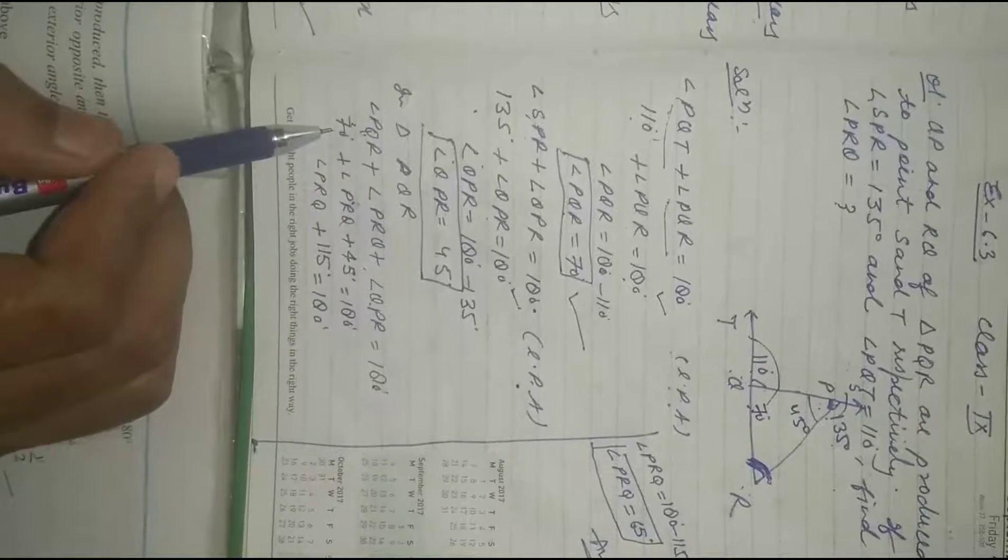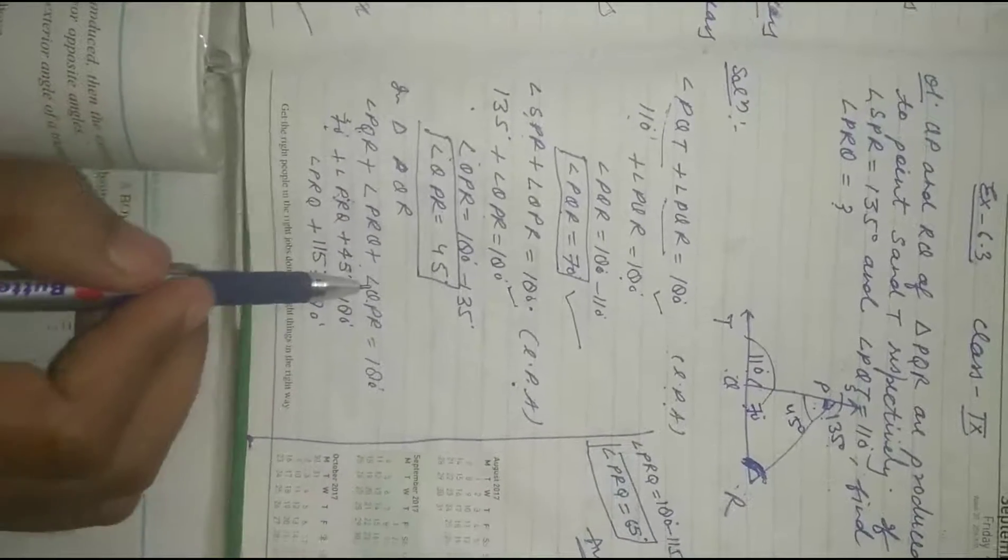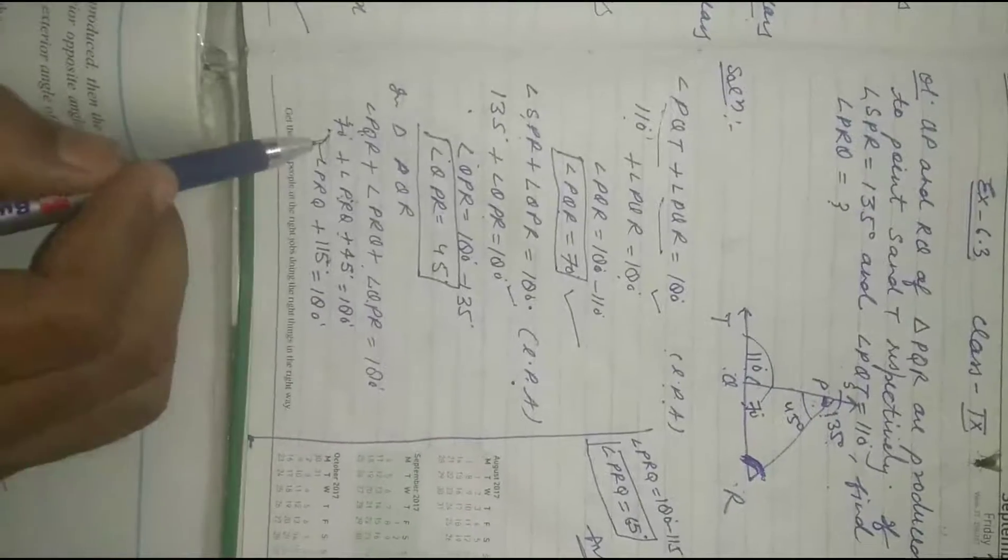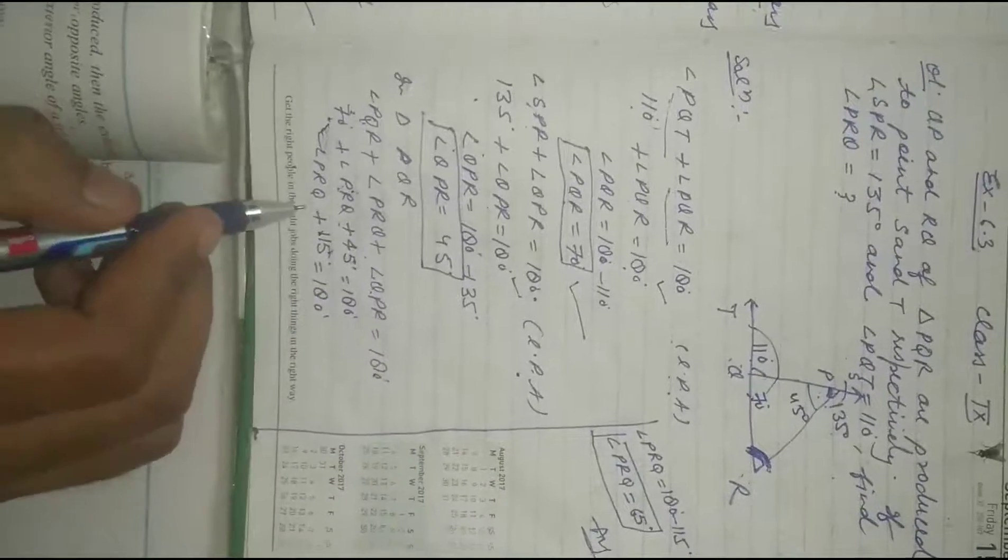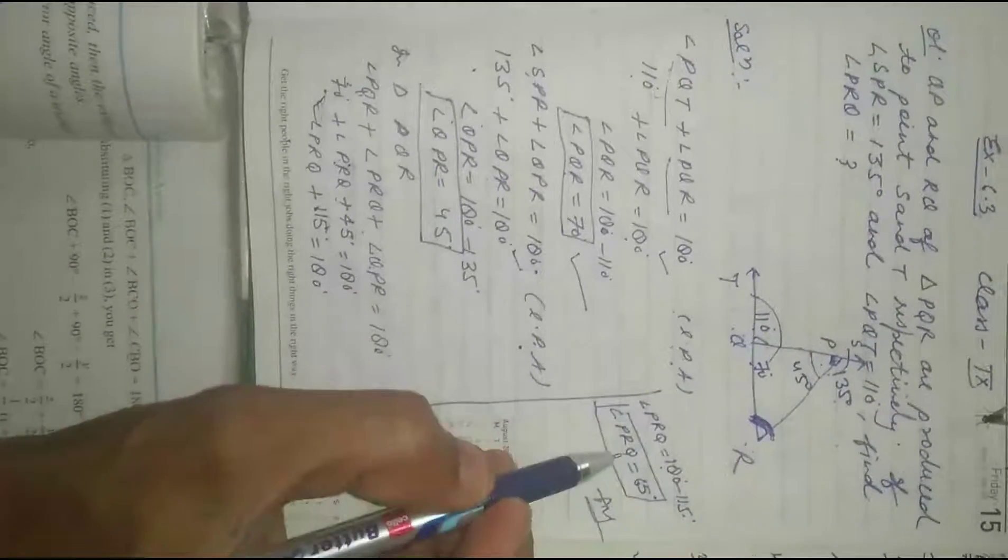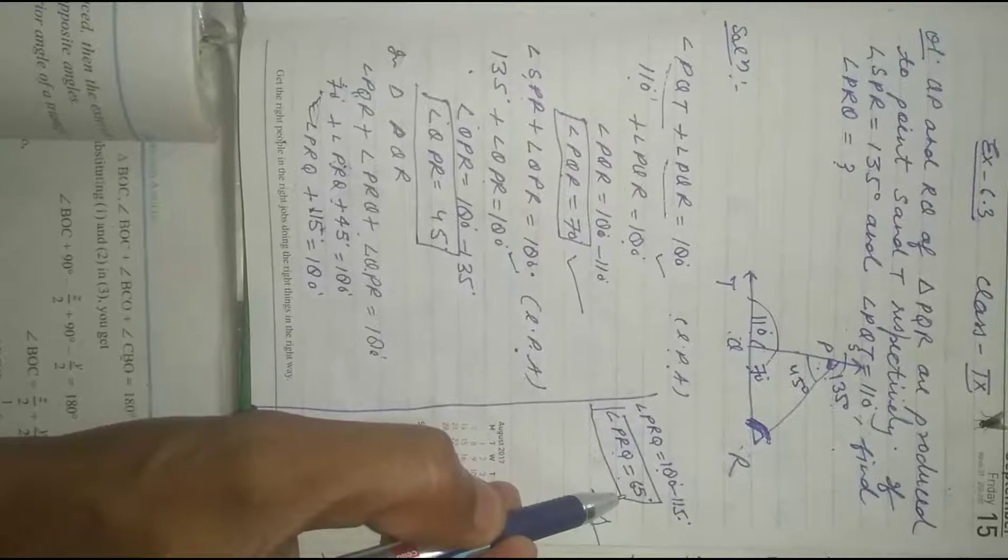PQR we proved above is 70 plus PRQ, and QPR we found is 45. We add both angles, we get 115 degrees. So angle PRQ equals 180 degrees minus 115 degrees, therefore angle PRQ equals 65 degrees.